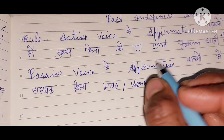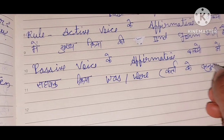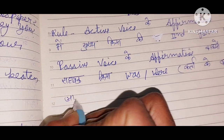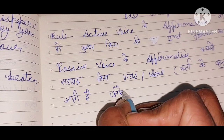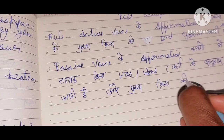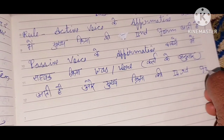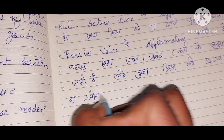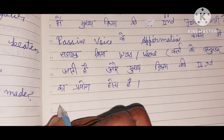Was or were — anusar means subject ke anusar: whether the subject is singular or plural, the helping verb is used accordingly. The main verb is the 3rd form.